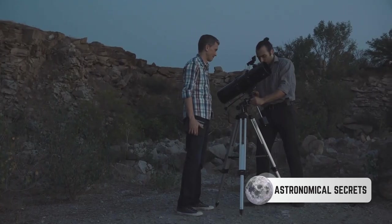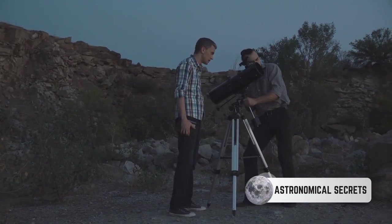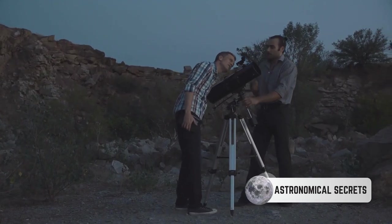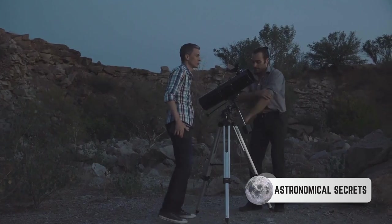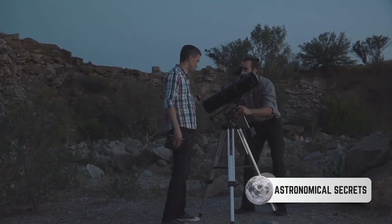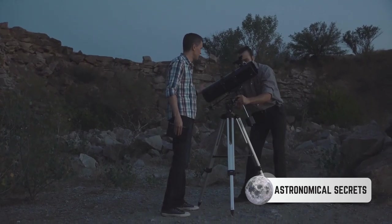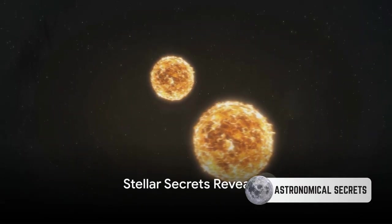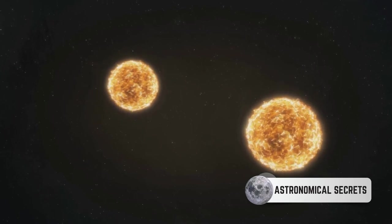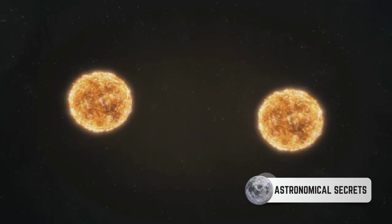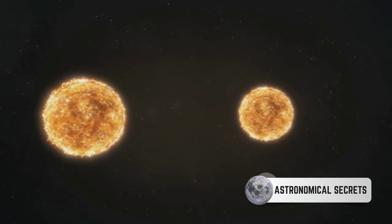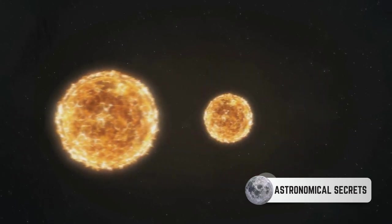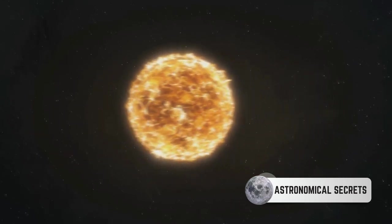Eclipsing binary stars are like cosmic teachers, using light and shadow to impart lessons about their nature, their dance, and their place in the universe. Through these eclipses, the stars reveal their secrets to us. By studying these eclipses, astronomers can uncover the hidden traits of stars. They're not just celestial spectacles for us to marvel at, but they are also cosmic laboratories rich with information about the universe we reside in.